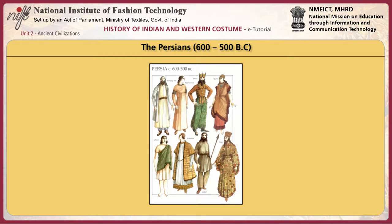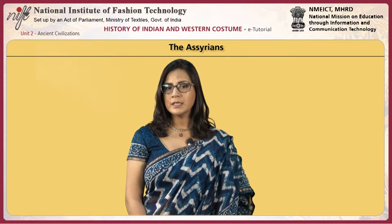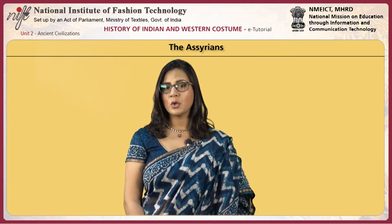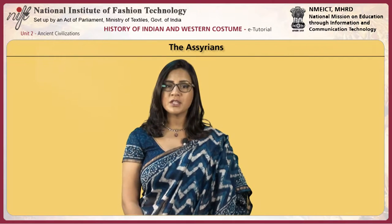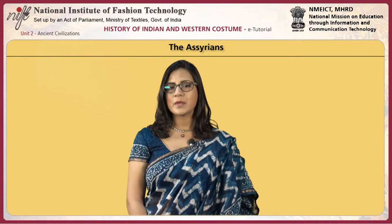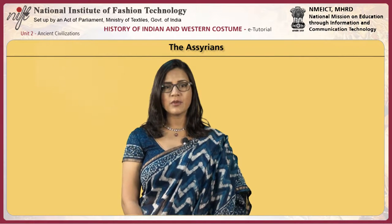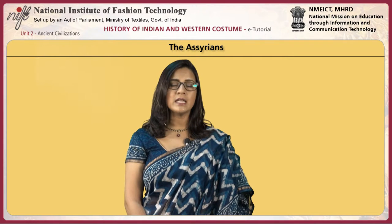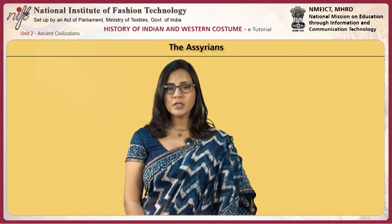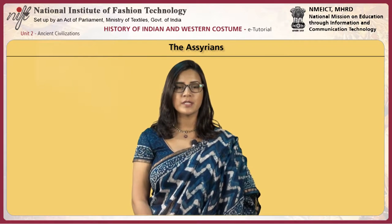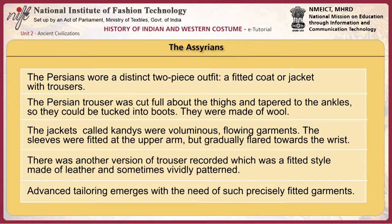We now move on to the Persian civilization. The Persian Empire encompassed Asia Minor in the north, to the Arabian Sea in the south, and from Egypt in the west to India in the east. Persians governed with more religious and cultural tolerance. The Persians wore a distinct two-piece outfit: a fitted coat or jacket with trousers.